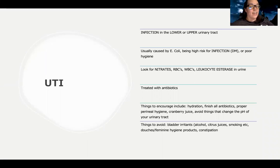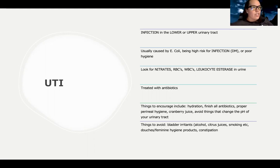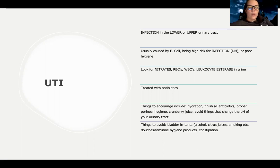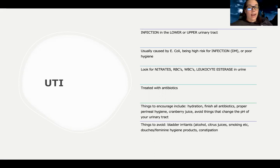We're going to get a culture and sensitivity to see what is growing and what the most effective antibiotics are to treat it. We'll treat with antibiotics, starting with a broad spectrum — one that gives general coverage overall to most UTIs — and then after we find out what bacteria is actually growing, we can change that if we need to. We're going to encourage hydration, finishing all antibiotics, proper perineal hygiene, wiping front to back, and cranberry juice, while avoiding things that change the pH of your urinary tract like douches and feminine hygiene products.